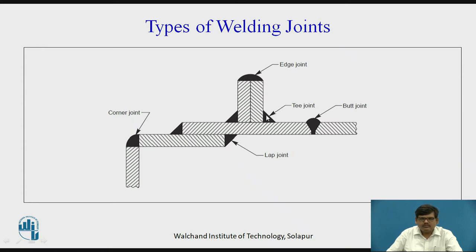Considering this vertical plate and this horizontal plate, we have a T joint because the two plates are in T fashion. Considering another plate and its horizontal plate, we have another T joint.